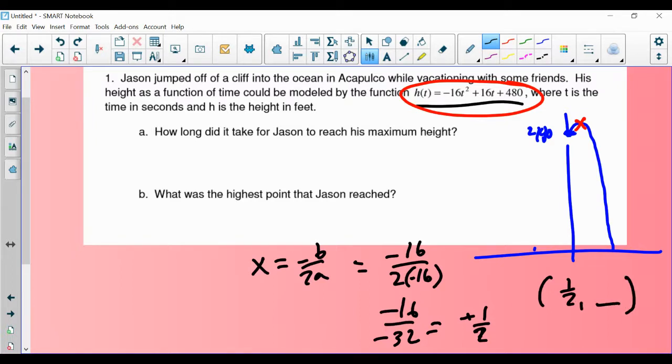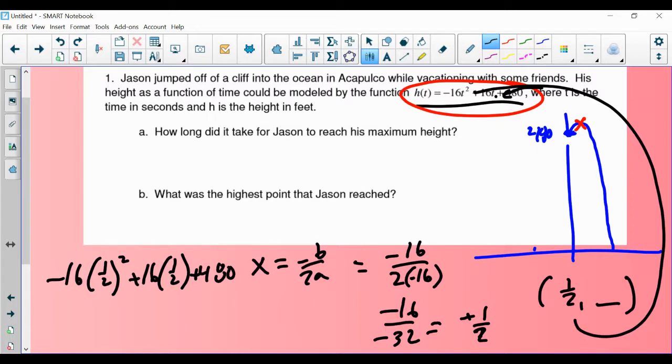So our vertex is going to be 1 half comma something. And the way that I told you guys to figure out what that something is, is to take 1 half and plug it in for t there and there. So we would have negative 16, 1 half squared plus 16 times 1 half plus 480. This is going to be a calculator question. Negative 16 times 0.5 squared plus 16 times 0.5 plus 480. When I type that into my calculator, I get 484.